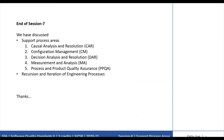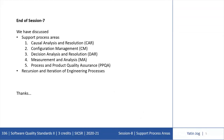That is the end of this session where we have discussed the last group of process areas — the support process areas — in which we have discussed Causal Analysis and Resolution, Configuration Management, Decision Analysis and Resolution, Measurement and Analysis, and Process and Product Quality Assurance.